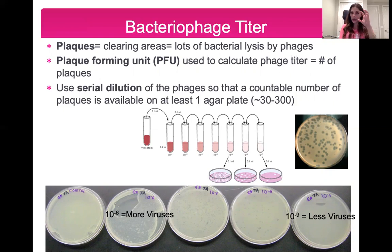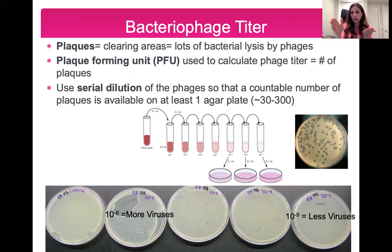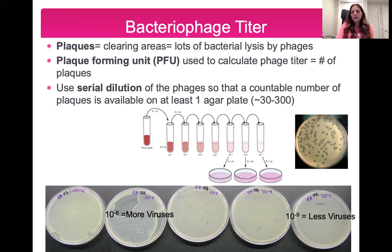To get a countable number of plaques, you need to do a serial dilution of the phage. You take your original virus culture, dilute it, then mix various dilutions with your bacteria and plate them on agar plates. We dilute the phages so we can count the plaques — you don't want a plate with a million plaques you cannot count, and you also don't want only two plaques. The lab tells you the dilutions to do: for example, 10⁻⁶, 10⁻⁷, 10⁻⁸, 10⁻⁹. Remember that 10⁻⁹ means it has a lot fewer viruses than 10⁻⁶.